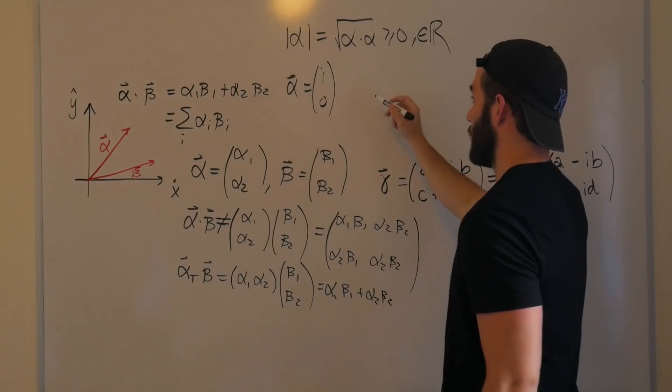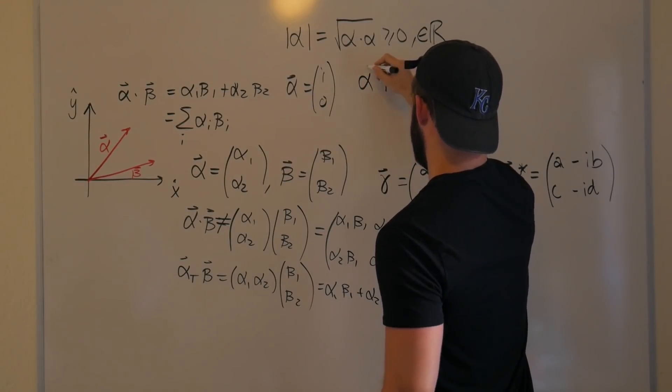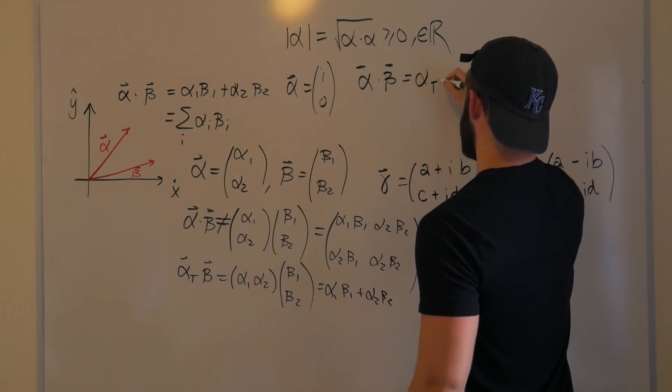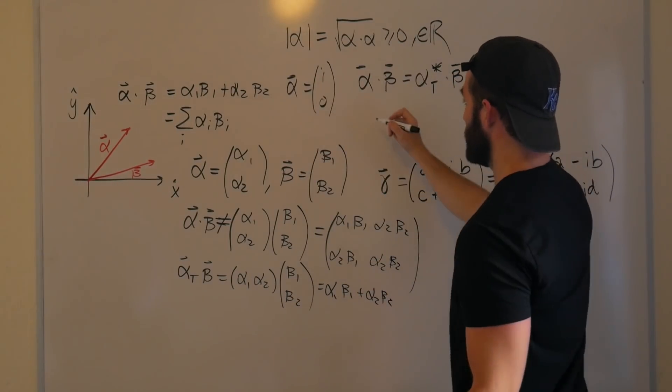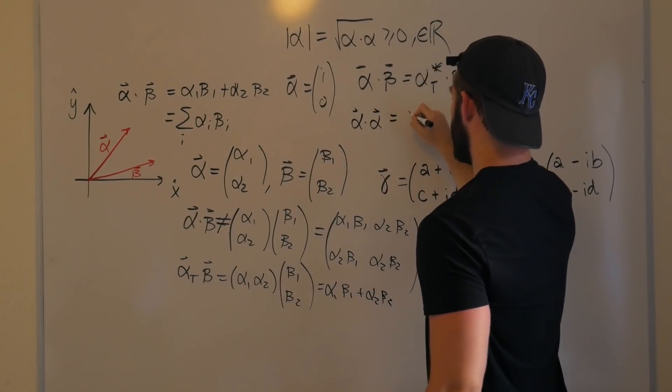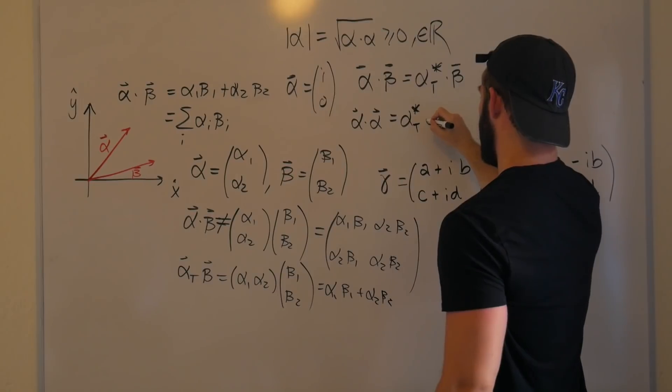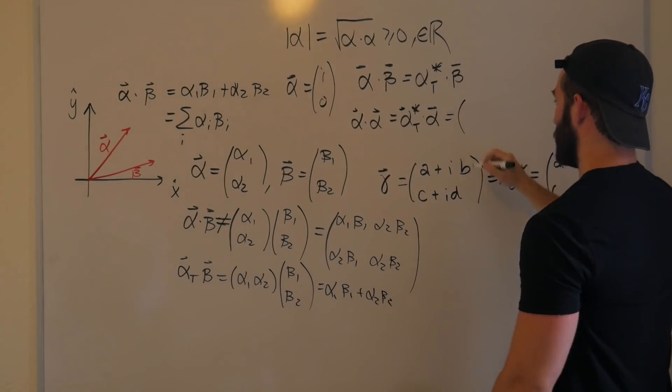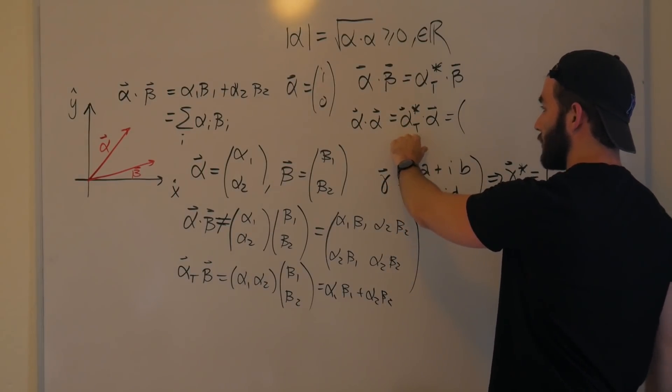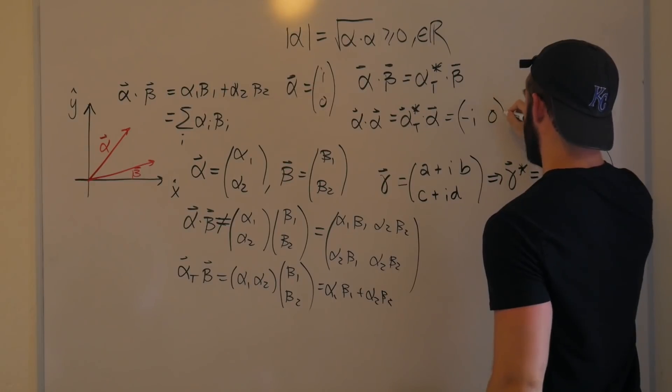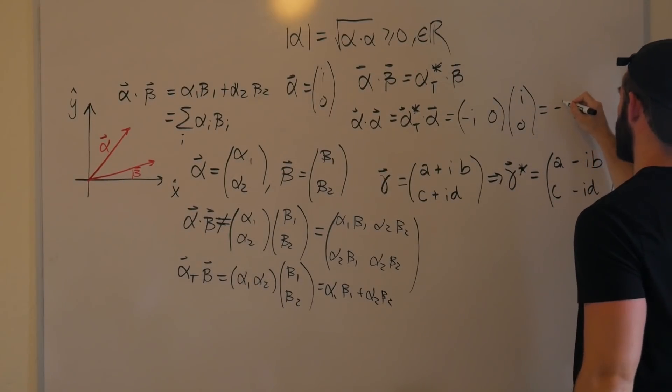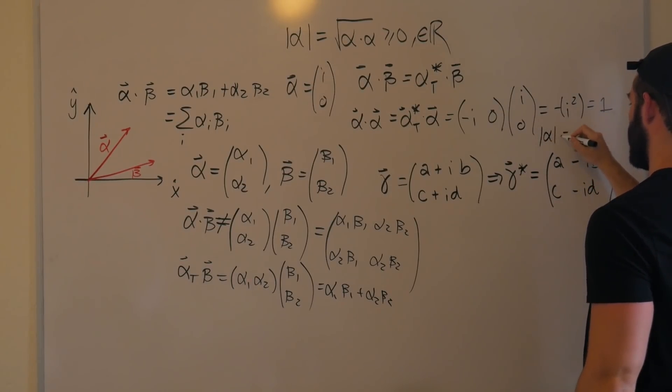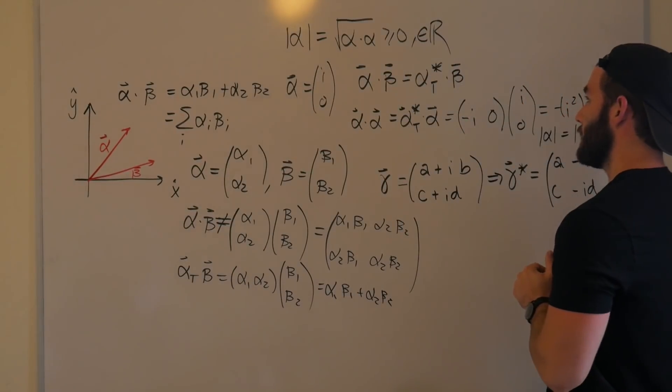The new definition of our dot product is that alpha dot beta is equal to alpha transpose complex conjugated dot beta. So if we want to find out what alpha dot alpha is, alpha dot alpha is equal to alpha conjugate transpose alpha, which is equal to, now that we're conjugating it and transposing it, it's going to be -i, 0. And then this one is staying the same, so it's i, 0, which is equal to -i squared, which is equal to one, which means that the magnitude alpha is also equal to one. So now we finally satisfy this relationship that we need.